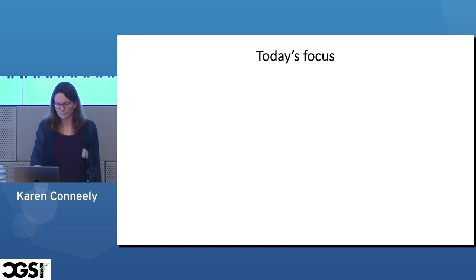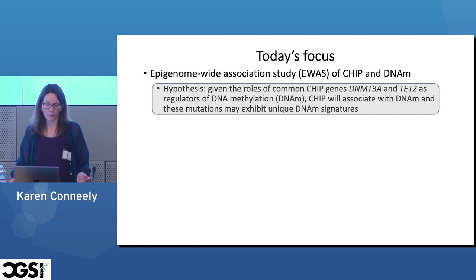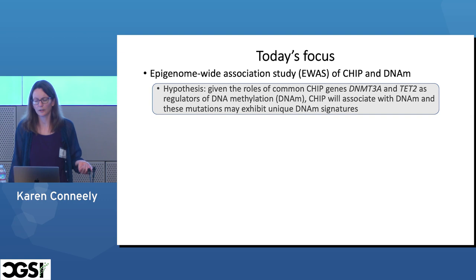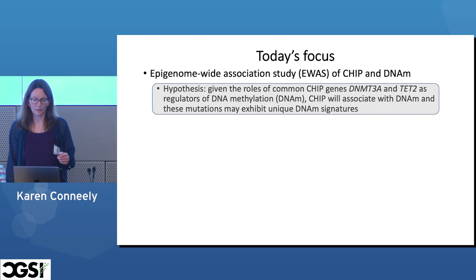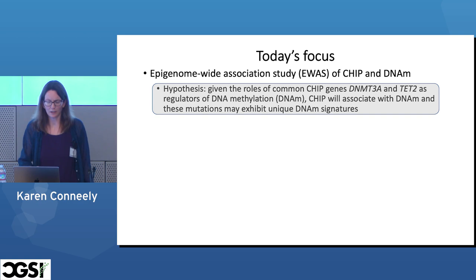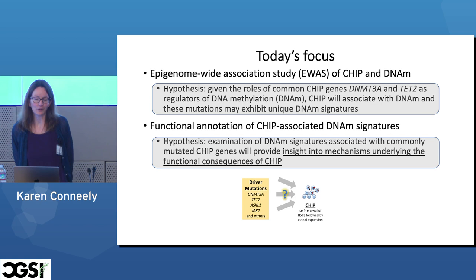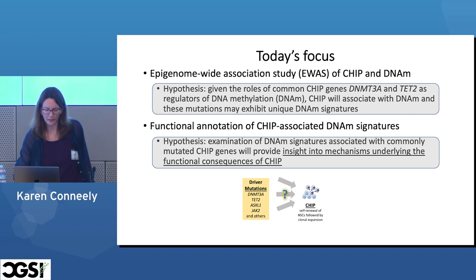Today's focus will be an epigenome-wide association study of CHIP and DNA methylation. Our hypothesis is that given the common roles of the two most common CHIP genes as regulators of DNA methylation, we expect CHIP to associate with DNA methylation, and believe these mutations may each have a unique DNA methylation signature. Assuming this is true, our plan was to functionally annotate these signatures to better understand how the driver mutations lead to the self-renewal phenotype we see in CHIP.